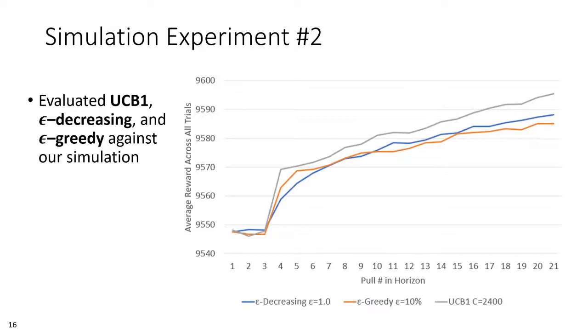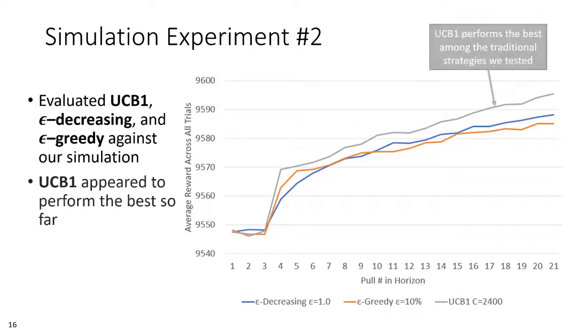Our second simulator experiment ran trials for each of UCB1, Epsilon Decreasing, and Epsilon Greedy strategies using the optimized parameters. The results shown here suggest that UCB1 holds an advantage over the others tested so far. Our third simulator experiment was exploratory,